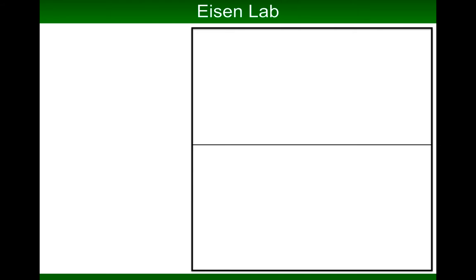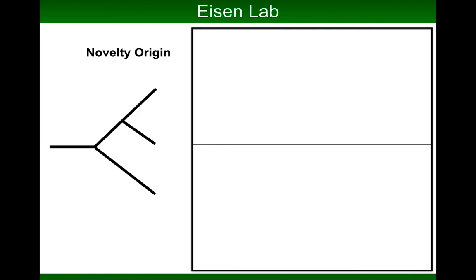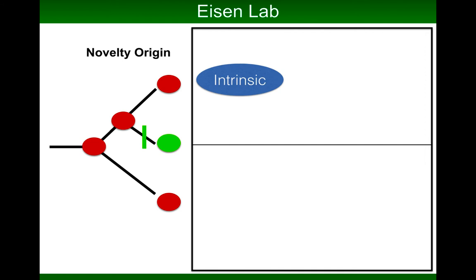What I'm generally interested in is the origin of novelty — the origin of new functions or new processes. If you look at this in terms of phylogeny, you have an organism in a tree. Its descendants inherit the same trait, and then there's some mutation, some origin of a new function, a new phenotype. For many years, what I was interested in is the origin of novelty that comes from intrinsic processes: mutation, recombination within a genome.